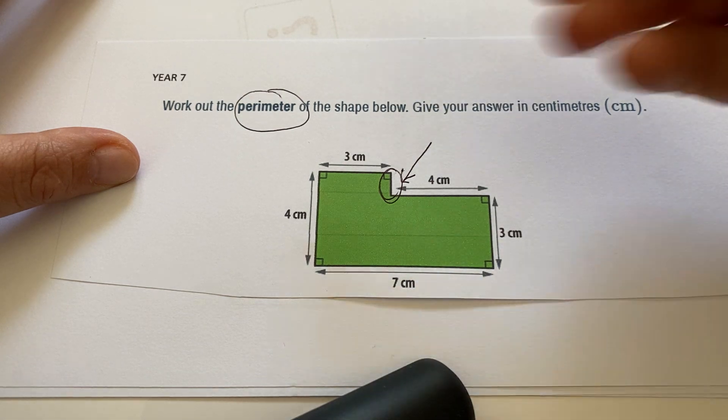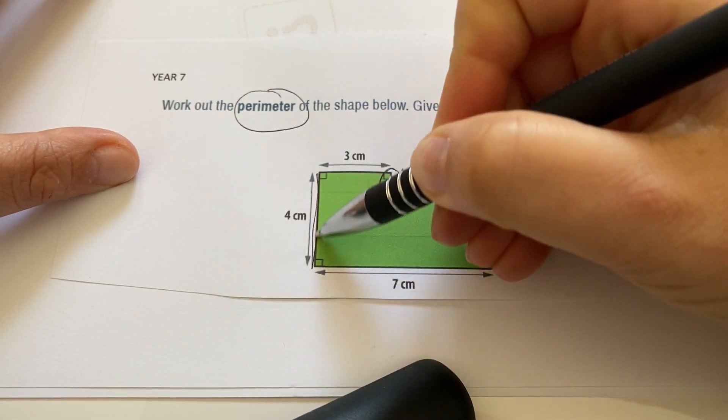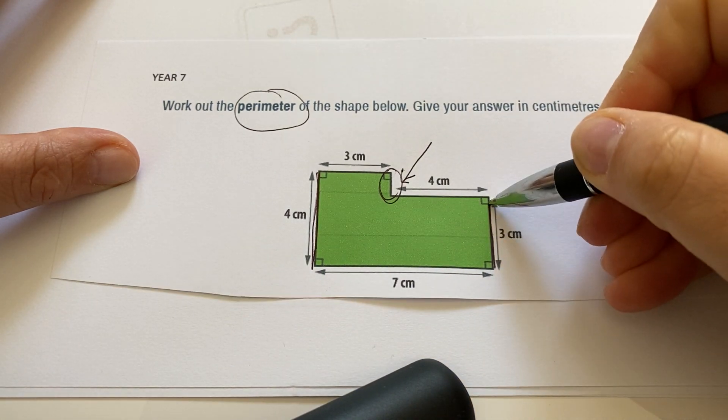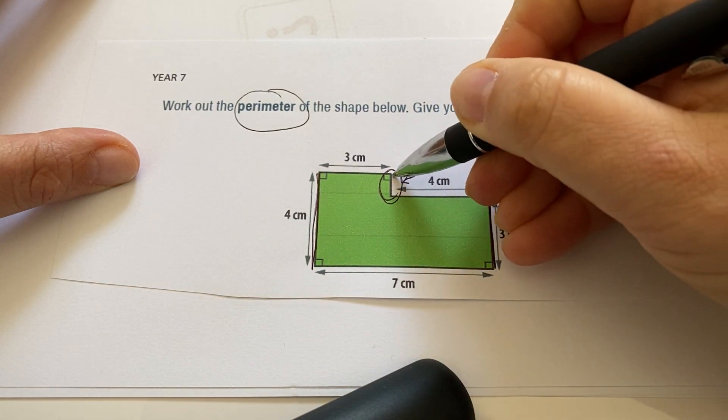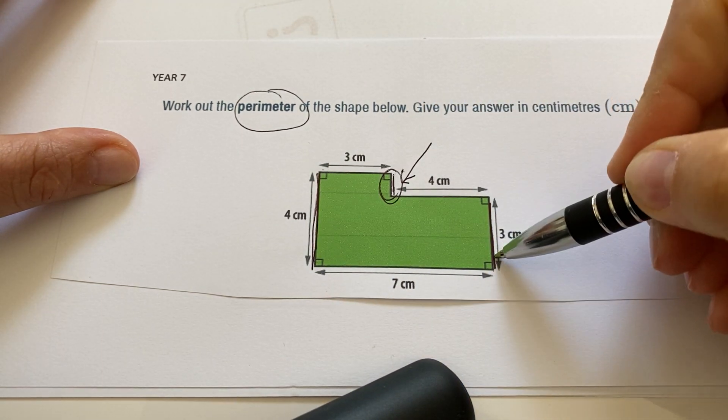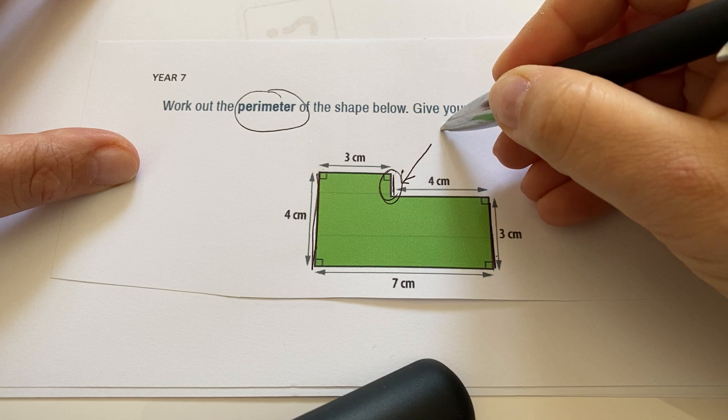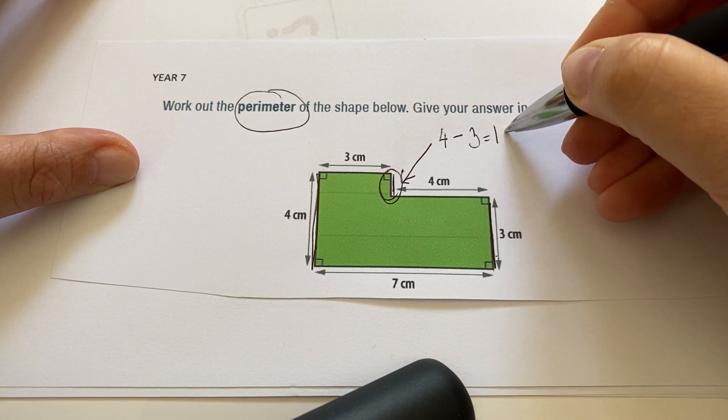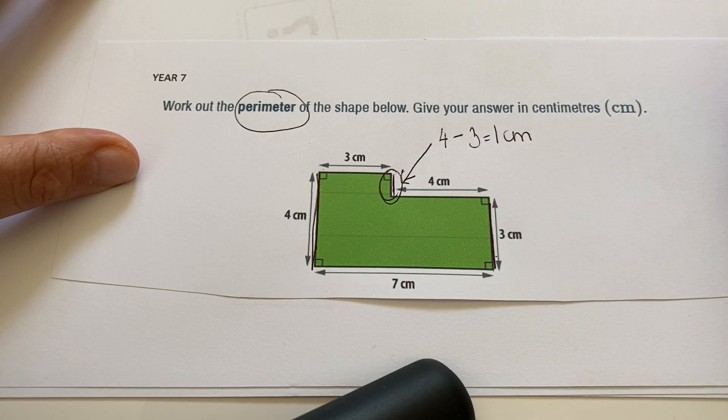What we can see here is this side is 4 cm and this side is 3 cm. This bit here is the gap between the length of those two. To find this length, you need to take the longer side and subtract the shorter one, so we now know that side is 1 cm long.